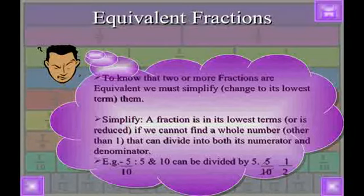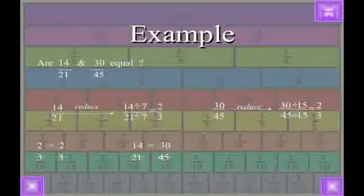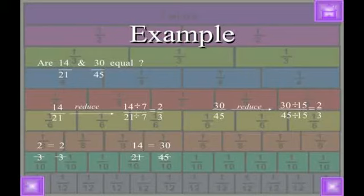Here some examples are given. Are 14/21 and 30/45 equal? First we reduce 14/21. When we reduce it we divide by 7, so 7 times 2 is 14, the numerator becomes 2, and 7 times 3 is 21, so denominator becomes 3. After reducing, 14/21 equals 2/3.